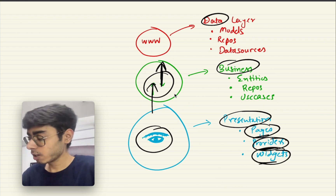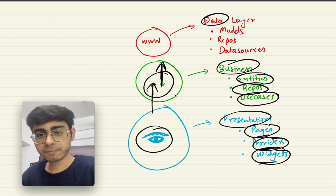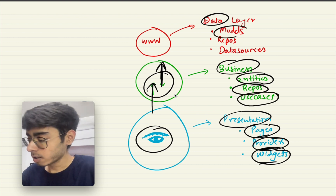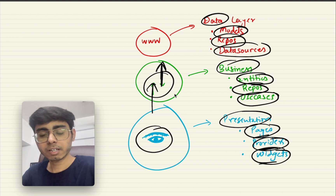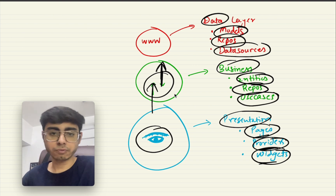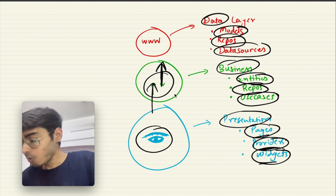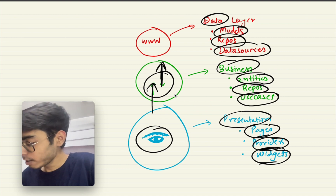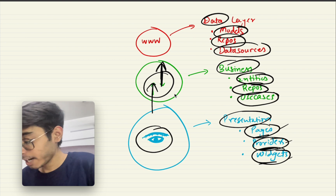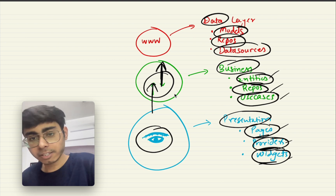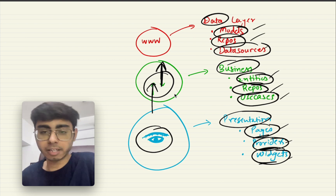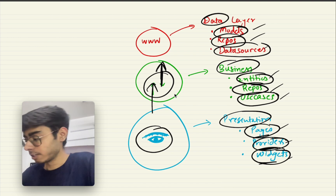In the business layer, you need folders for entities, repositories, and use cases. In your data layer, you need folders for models, repositories, and data sources. These are the folders you need in your clean architecture. Now let's dive deeper into what pages, providers, widgets, entities, repositories, use cases, models, repositories, and data sources actually are.